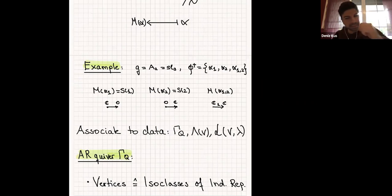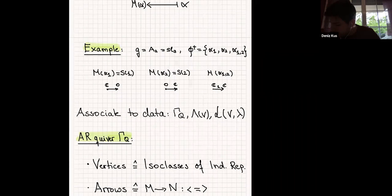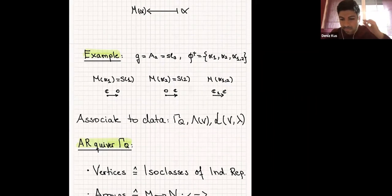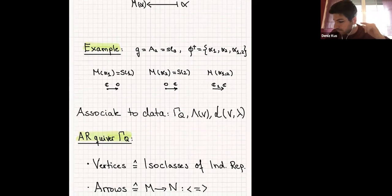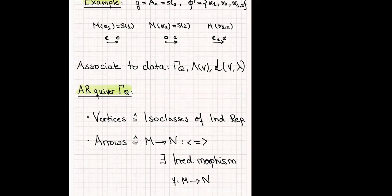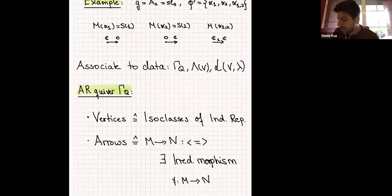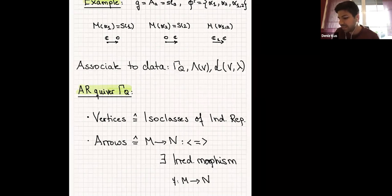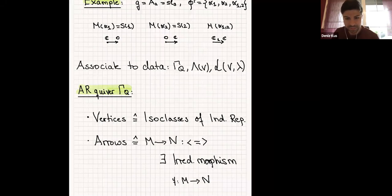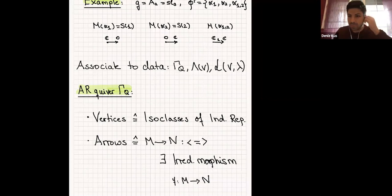I want to think of them as indecomposable representations of a quiver to explain what the arrows are. You draw an arrow from an indecomposable representation M to an indecomposable representation N if and only if, by definition, there exists an irreducible morphism from M to N. Irreducible means, in the usual sense of algebra, a non-unit — a non-isomorphism which cannot be written as a composition of non-isomorphisms.